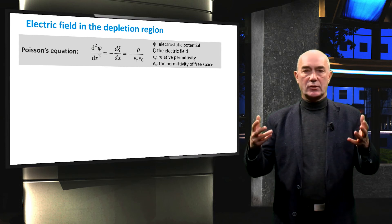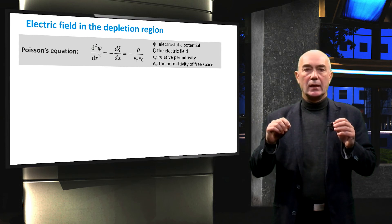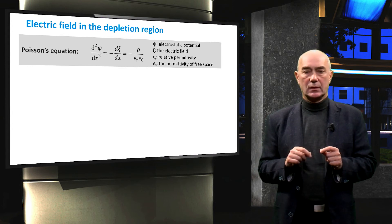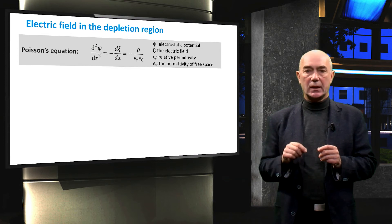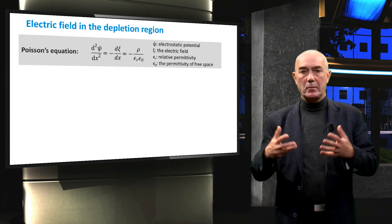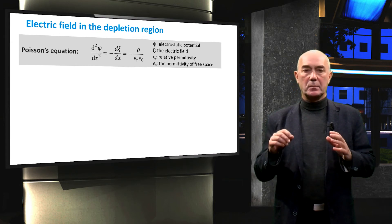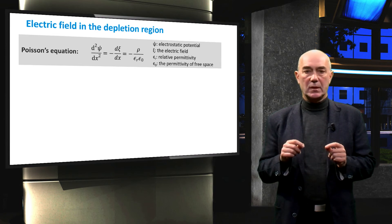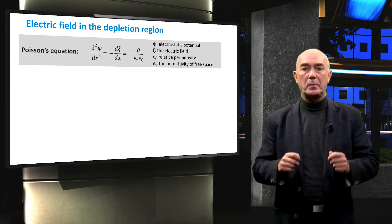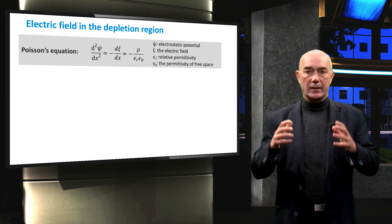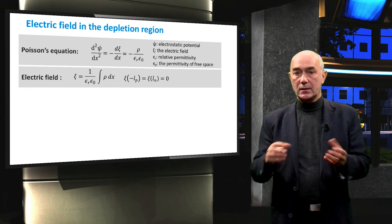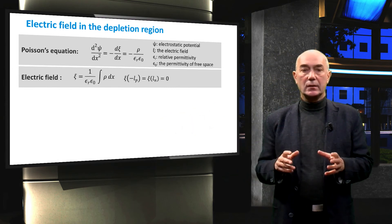Using this space charge density profile, we can derive the electric field in the depletion region. To calculate the electric field, we use Poisson's equation in one dimension. Poisson's equation relates the second derivative of electrostatic potential Psi and the first derivative of the electric field to the space charge density. We use the space charge density profile in the depletion region divided by the permittivity of the semiconductor material. The permittivity is expressed as the product of the relative permittivity of the semiconductor material, Epsilon_R, and the permittivity of free space, Epsilon_0. By integrating the space charge density along the depletion region, we get the electric field as a function of position.